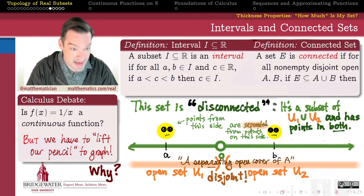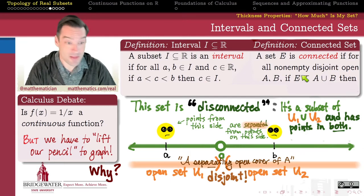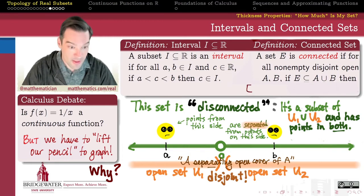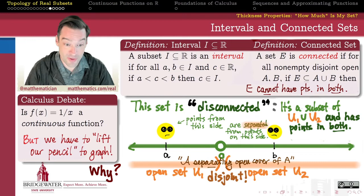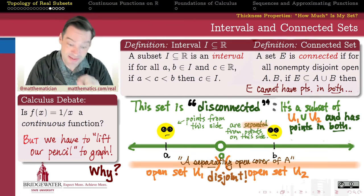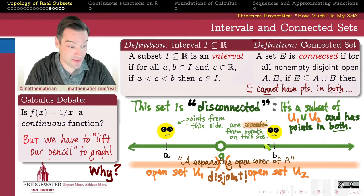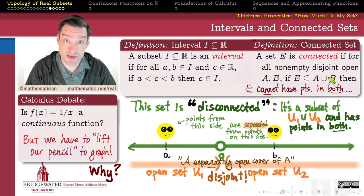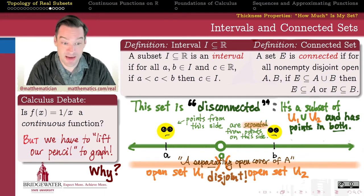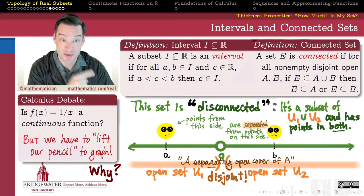So that's the more general idea that we're going to have for connectedness. A set is connected if any time you give me two non-empty disjoint open sets A and B, if E is contained in their union, then E cannot have points in both A and in B, if we're going to say that E is connected. E is disconnected if I have points in more than one of the non-empty disjoint open sets in my separating open cover. And so to be connected, we have to be able to say that any time E is contained in the union of two non-empty disjoint open subsets, that must mean that E is entirely contained in one of them or the other.